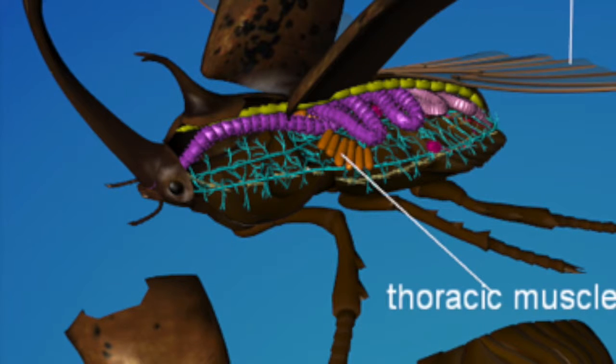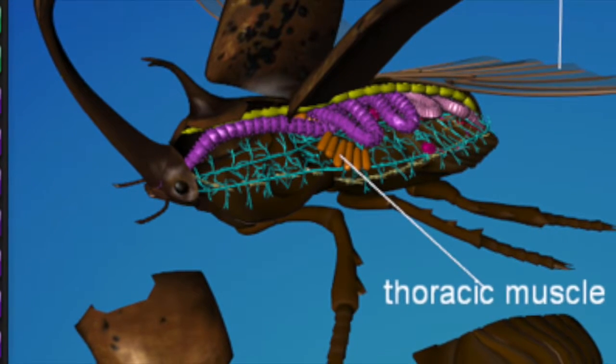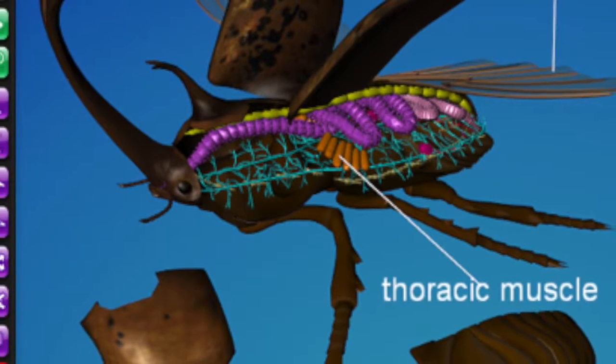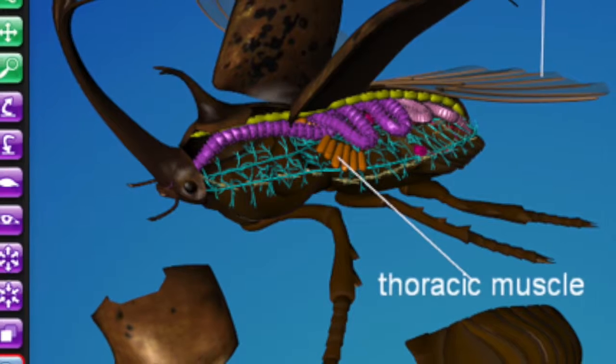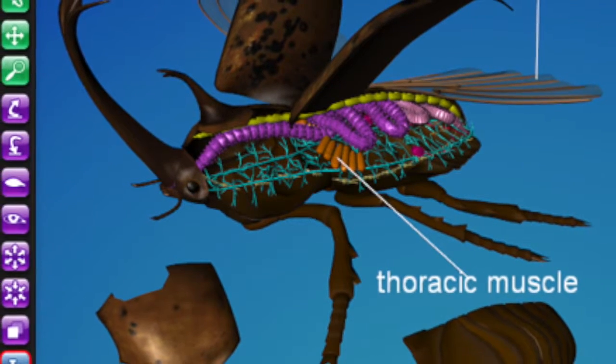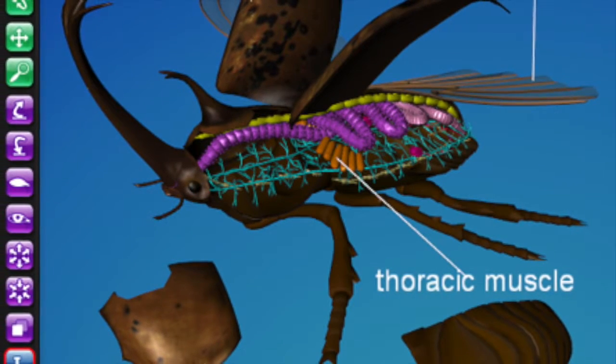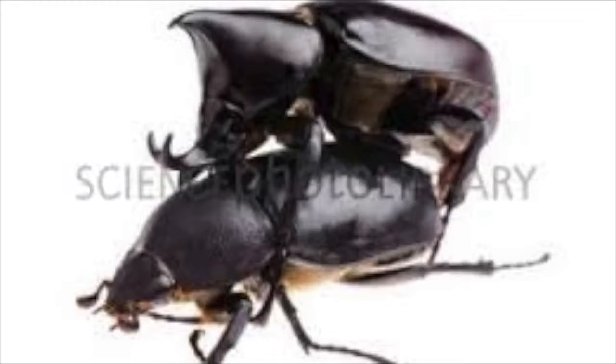They have a coelom. Their main internal cavity is a hemocoel, which helps for the organs and the open blood system to be formed and accommodated.